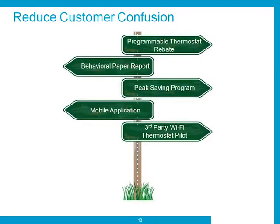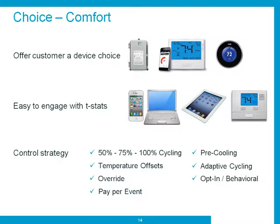Now putting our customer hats on — customer confusion is a major issue in the marketplace. To misquote the philosopher George Carlin: think about how disinterested in energy the average person is, then realize 50% of people care even less than that. So we've got to make sure our message is clear and consistent. There are five common programs in the market that can all be served by one third-party thermostat EE-DR program. When dealing with simplification, there's a critical choice element that technology offers, but it's also critical not to give so much choice that you drive confusion.